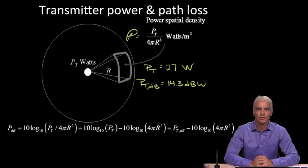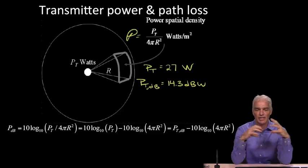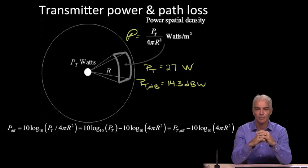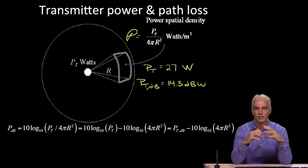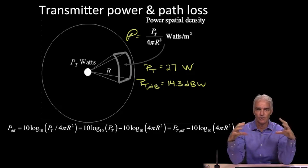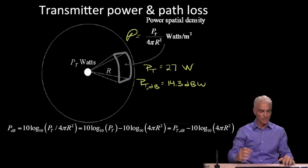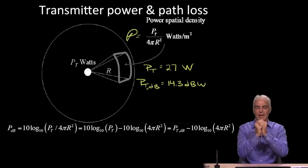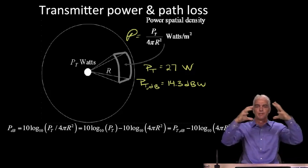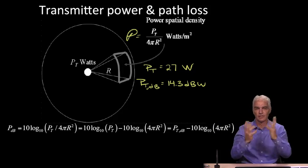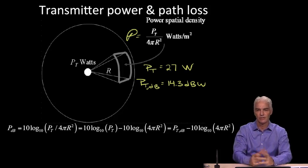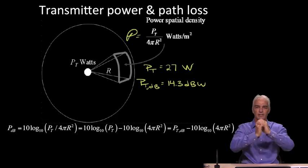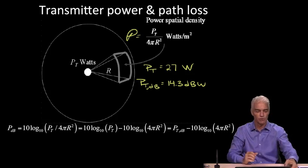In the previous video, we looked at transmitted power and how the signal spreads out through space, and we talked about how the power density decreases as the area of the sphere gets larger as that signal spreads out through space. I mentioned that you can imagine the signal like a light bulb and the light spreading through space. It's not a light frequency that we can see, but it's an electromagnetic spectrum, and the energy spreads out through space.